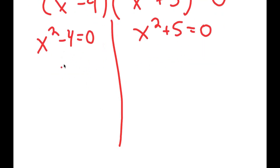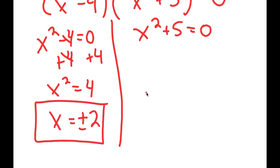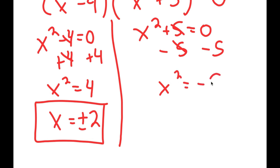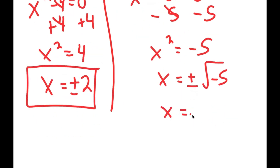For x squared minus 4 equals zero, I add 4 on both sides to get x squared equals 4, which gives x equals positive or negative 2. For x squared plus 5 equals zero, I get x squared equals negative 5, so x equals positive or negative the square root of negative 5, which equals positive or negative the square root of 5 times i.